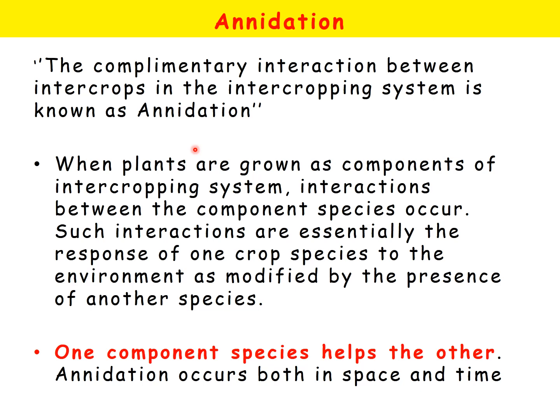Anidation is a complementary interaction in the intercropping system. In the intercropping system there are two crops. When crops are grown as components of an intercropping system, interactions between the component species occur. Such interactions are essentially the response of one crop species to the environment as modified by the presence of another species.